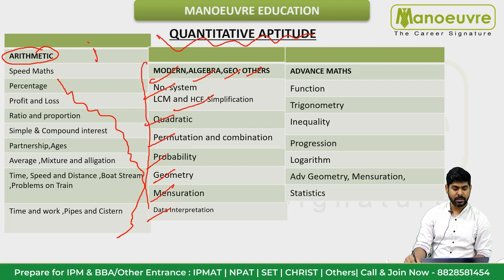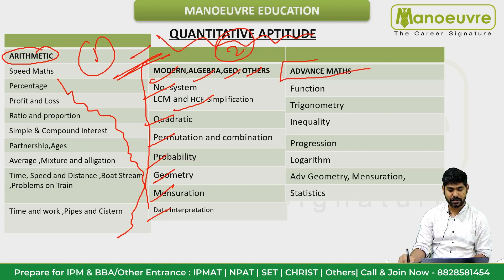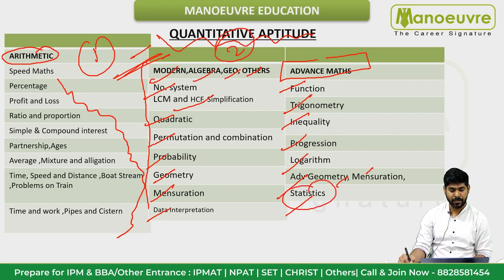If you work on the arithmetic section well, you will get a decent score. Then come to Advanced Math topics: Geometry and Mensuration advanced versions, Statistics — Mean, Mode, Median — Logarithm, Progressions, Functions, and Sets. You will need to prepare all these topics as well.